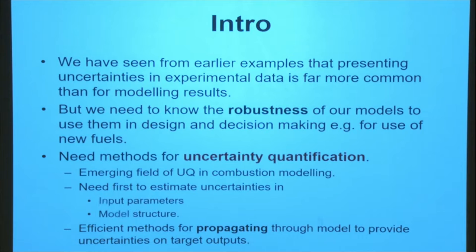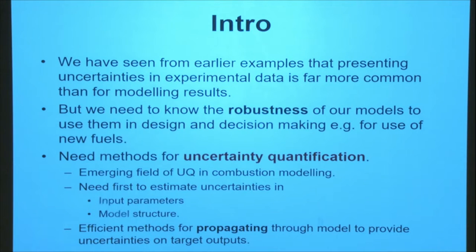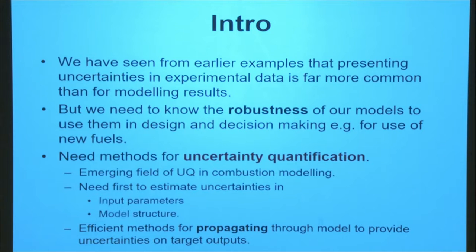And yet, through the week, we've been looking at how we parametrize models and the number of different parameters we might have in some of these complex models, and also acknowledging that sometimes their estimates — their clever estimates may be using group additivity or reaction rate rules — but they're not detailed measurements or high-level theory. So there will be some uncertainty associated with those parameters. And actually, in terms of understanding the robustness of our model, we should be able to express the error bar in our model.